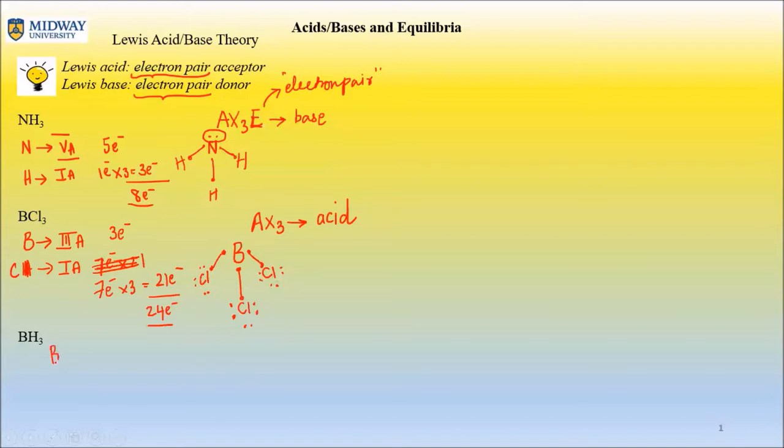Same business here. Boron is in group 3A, hydrogen is 1A. Hydrogen is one electron times three, so we have three electrons total, total of six electrons. Boron again goes at the center here, and we have three electrons on boron and each of those combines with three of the electrons on the hydrogen. Hydrogen only has one so there are no more extra electrons left. Again we're left with A for one central atom, three outer atoms, no electron pair left on the central atom. So it is an acid.